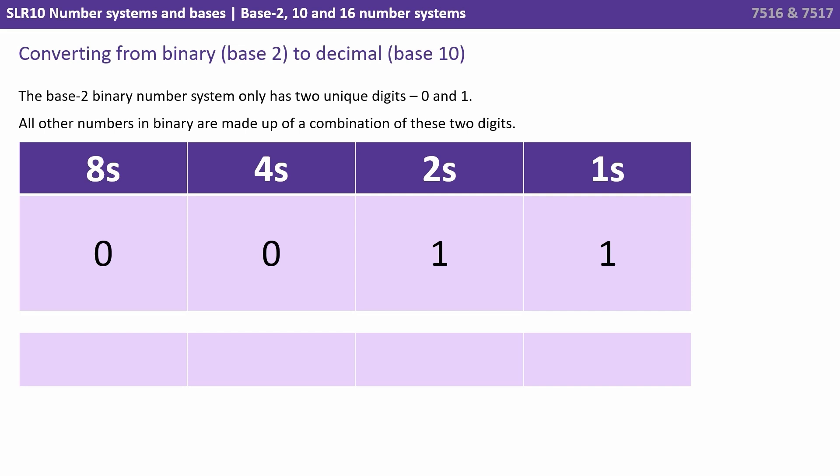So what is the number 0011? Well that's 0 lots of 8, 0 lots of 4, 1 lot of 2 and 1 lot of 1. A 2 plus a 1 is 3. So this number is 3 in decimal or denary, 11 in base 2 binary.